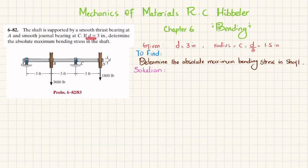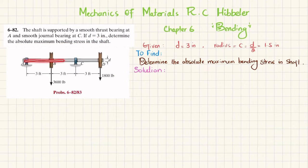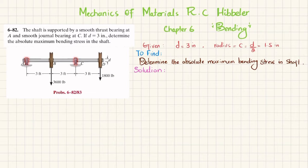If the diameter is 3 inches, determine the absolute maximum bending stress in the shaft. You can see this shaft has diameter 3 inches; at point A we have a smooth thrust bearing and at point C we have a smooth journal bearing. At B and D we have loads of 3600 pounds and 1800 pounds.